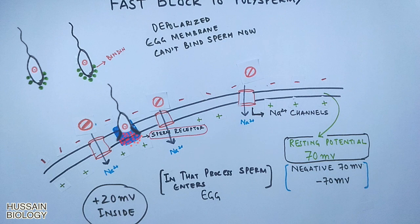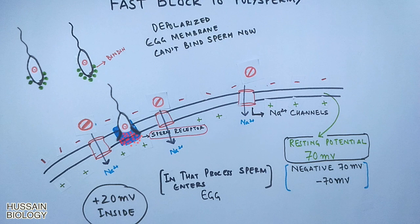It is important to note that this electrical block is gradually weakened over time, and eventually the resting potential of minus 70 millivolts is restored. In that time, the slow block to polyspermia must be launched before the electrical block vanishes.